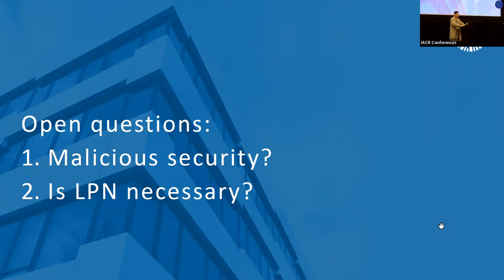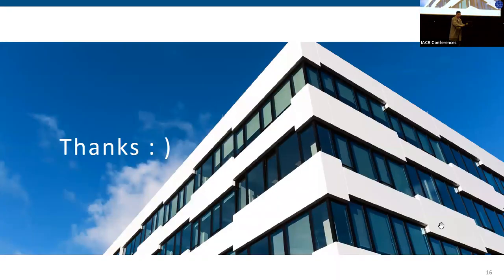There are a few open questions to be solved in future works. For example, can we upgrade our semi-honest security to malicious security? Or can we remove or replace LPN assumptions with others? Thanks for listening. Do we have any questions? Hi, thank you for the talk. Very nice tricks. I was wondering what kind of error rates do you use in the LPN assumption? Thanks for the question. The error rate is slightly sublinear to the number of samples. It's a very small polynomial error rate. Okay, thank you.